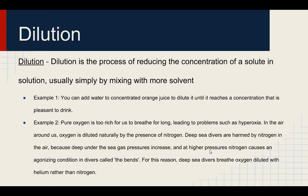Dilution is a process of reducing the concentration of a solute in a solution, usually by mixing in more solvent. For example, you can add more water to concentrated orange juice to dilute it until it reaches a concentration that is pleasant to drink. Another example is pure oxygen — pure oxygen is too rich for us to breathe for a long time, leading to problems such as hyperoxia. In the air around us, oxygen is diluted naturally by the presence of nitrogen.